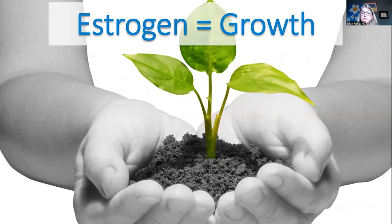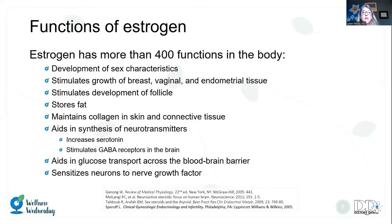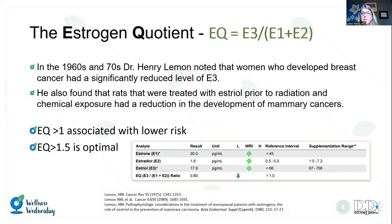We'll start by discussing estrogen. When we think about the action of estrogen, we think about how it typically promotes growth — it's trophic, it nourishes us. There are more than 400 functions of estrogen in the body. It helps develop sex characteristics in puberty, stimulates breast, vaginal, and endometrial tissue growth, stimulates follicle development every month, promotes fat storage in certain areas, maintains collagen in skin and connective tissue, aids in neurotransmitter synthesis, glucose transport across the blood-brain barrier, and protects and nourishes neurons. Estrogen gets a bad rap sometimes, but it is essential to having a healthy woman.